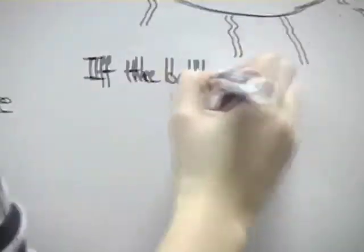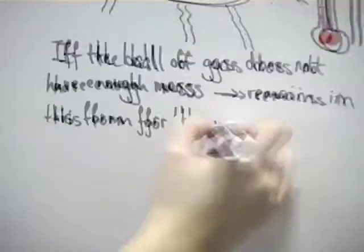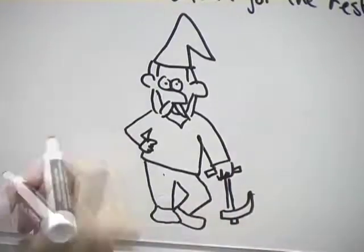If the ball of gas does not have enough mass because not enough atoms have been collected, then it will remain in this form for the rest of its life, only glowing dimly. Some astronomers call this a brown dwarf.